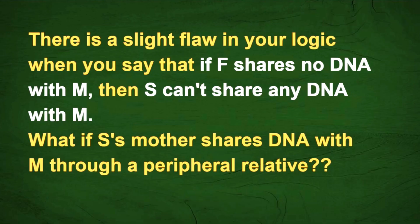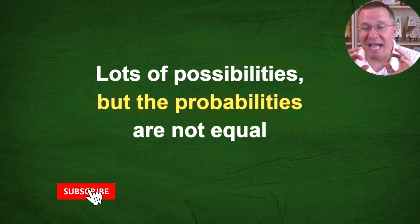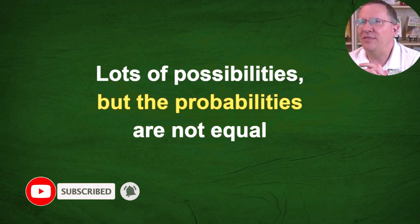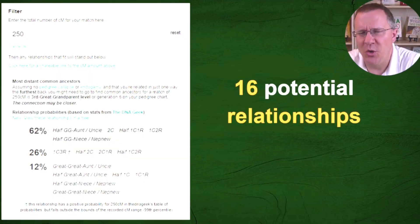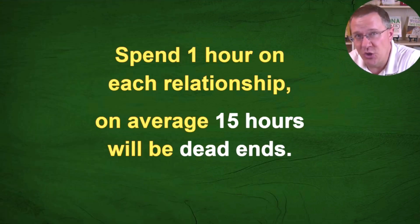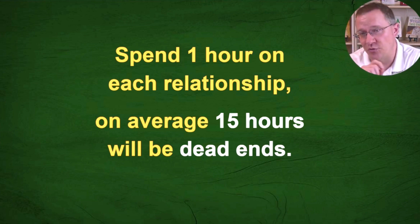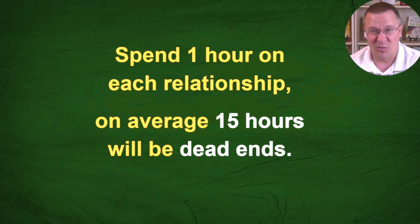That is an interesting possibility. When we're looking at this, we need to have some research priorities, because there are lots and lots of possibilities, but the probabilities of each one of those possibilities are not equal. If I share 250 centimorgans with a match and I look on the shared cM tool, I can see that there are 16 potential relationships listed. If I assume I spend an hour researching each one of those relationships, on average, 15 hours out of every 16 hours I spend is going to be dead ends — somewhat wasted.